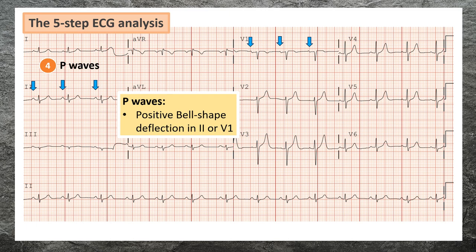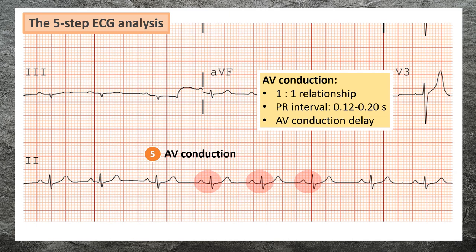Step four: determine the presence of P waves. In lead 2, the P wave is typically a small positive deflection from the isoelectric baseline that occurs just before the QRS complex.